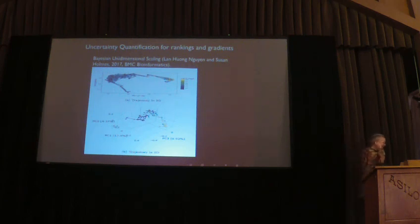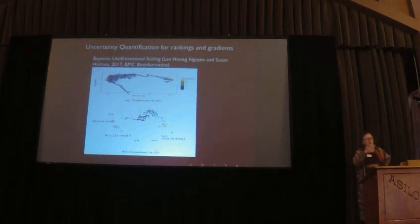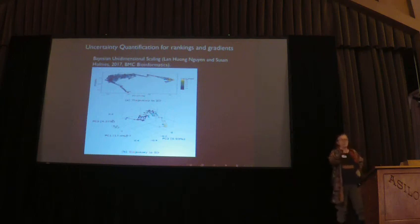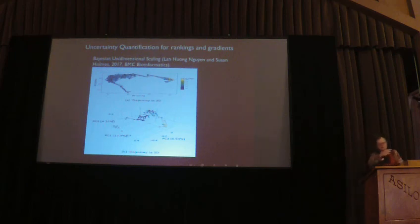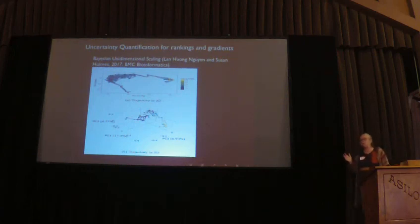In single-cell data you have measurements as the embryo or cells develop, but you don't know the actual time. You want to reconstruct pseudo-time — like finding time in Proust — to order very high-dimensional data along a developmental trajectory. This works very well: you can find the underlying gradient quite easily. Similarly for ocean bacteria sampled at different depths: even if you don't tell the program the depths, depth will emerge as a natural gradient.